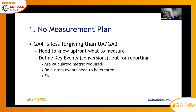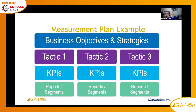A measurement plan starts with your business objectives and strategies. If you're an e-commerce site, it's not just 'sell more' — it's be more profitable, sell more high-margin products. You need to define your key performance indicators. If your client doesn't know what their KPIs are, there is a problem. This flows into development of custom reports and segmentations. Without this in place, you shouldn't have done the GA4 implementation. But if they've moved ahead, the audit can bring them in line and ensure data is being collected in support of requirements.